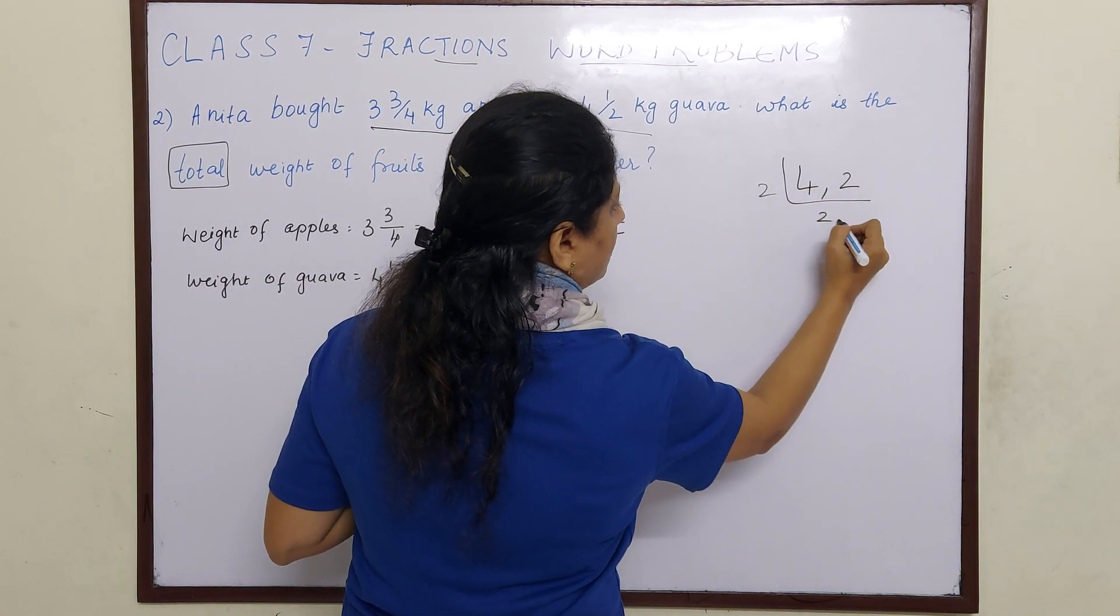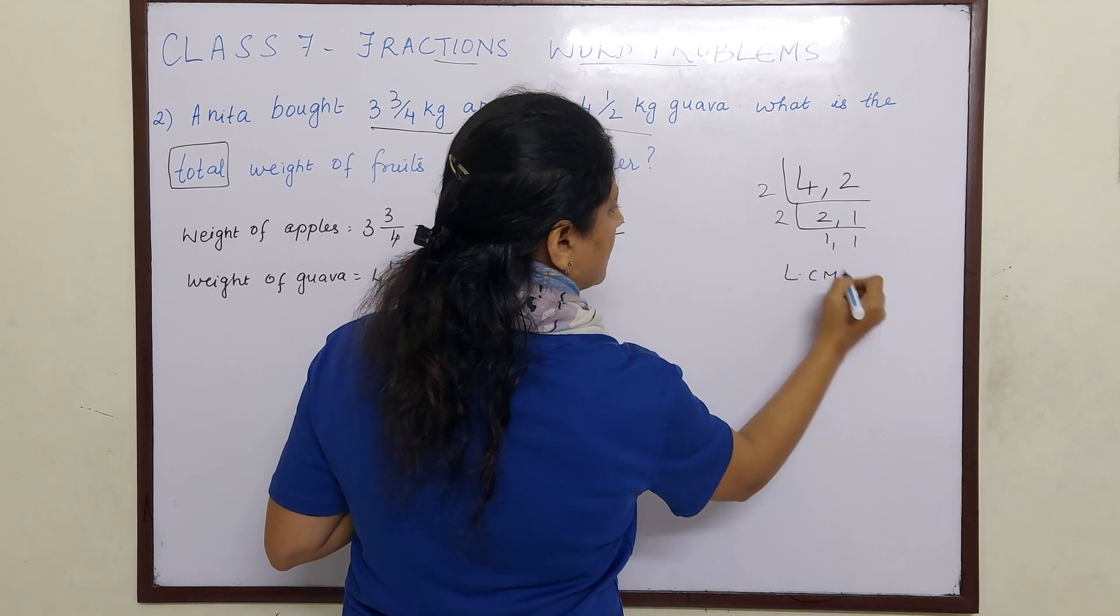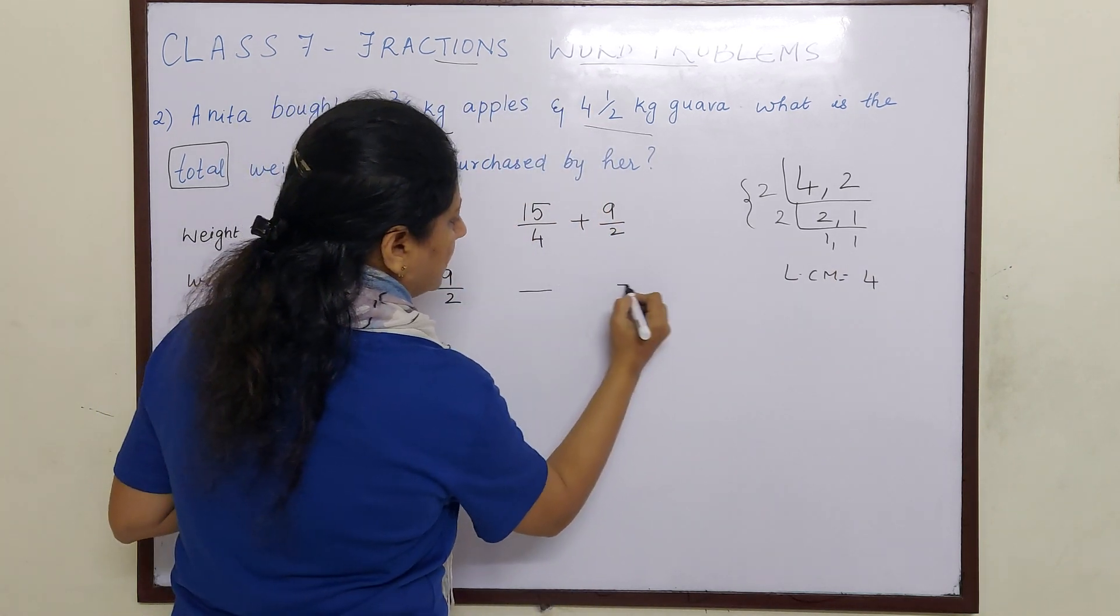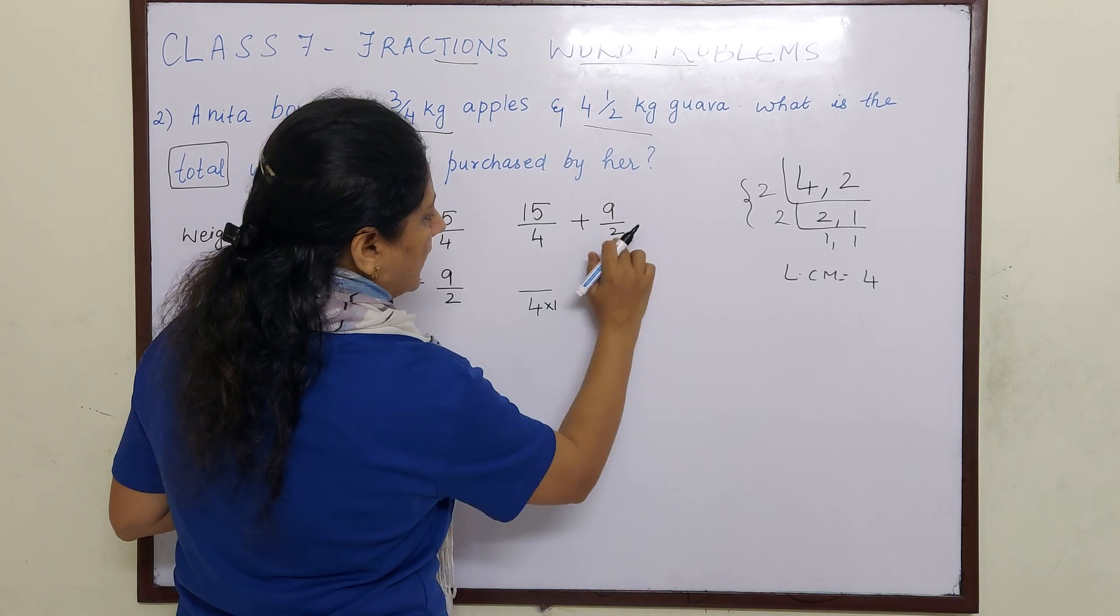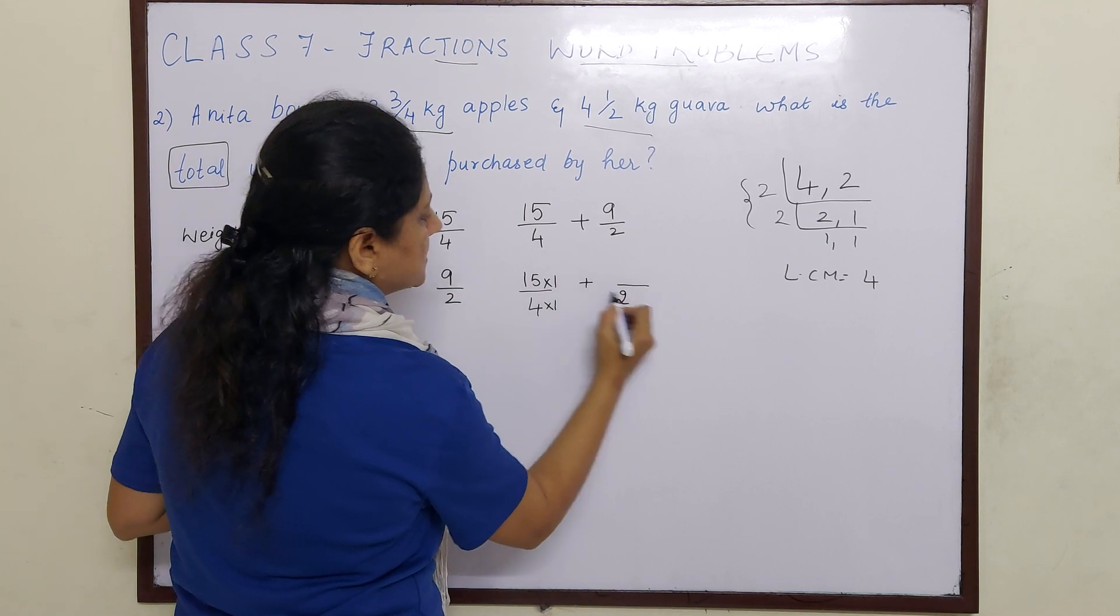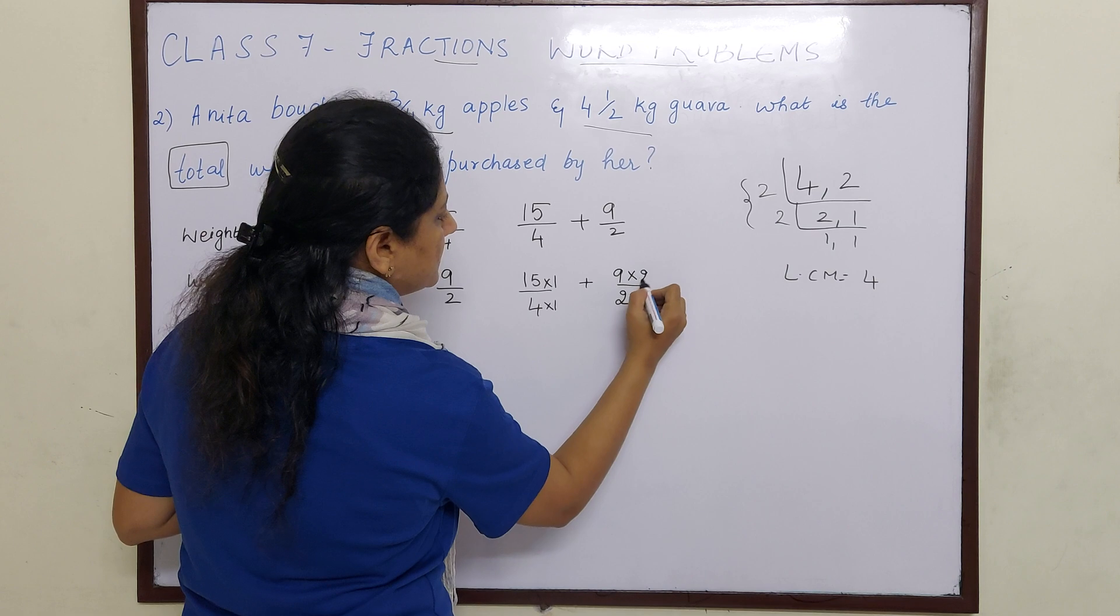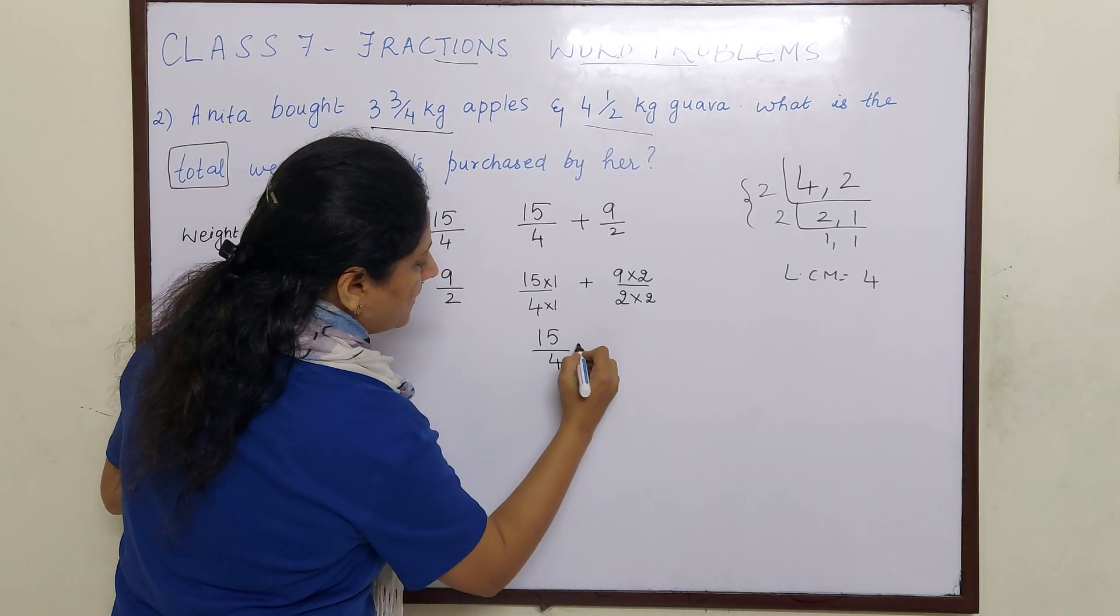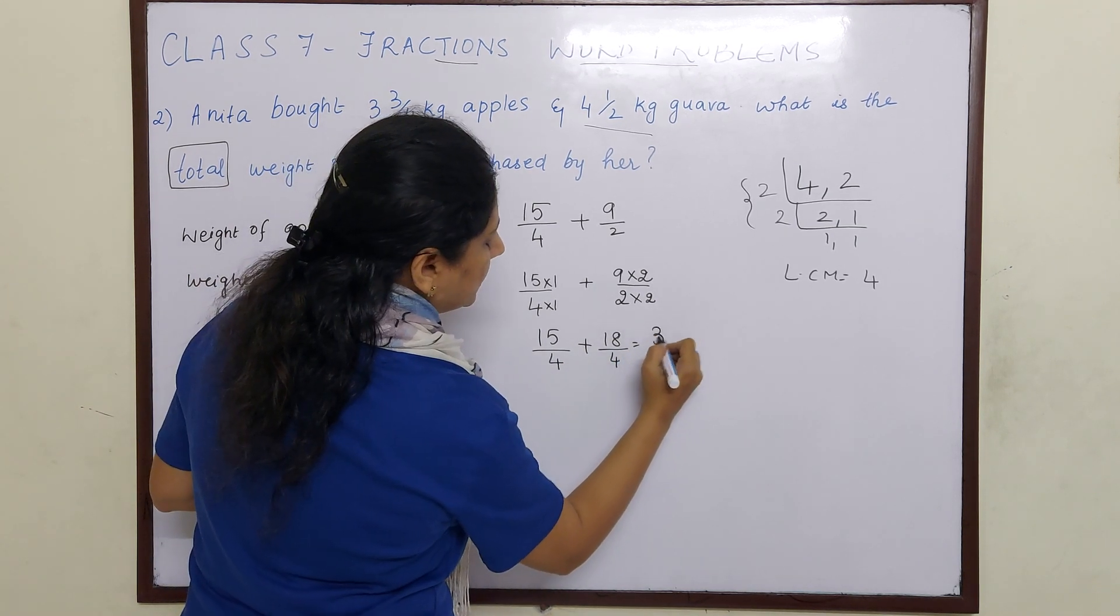So let us take LCM of 4 and 2. 2 times 2 is 4. So our LCM is equal to 4. So here we have to convert both into denominator 4. 4 times 1 is 4, and this is 2. So 2 times 2 is 4. Numerator also has to be multiplied by 2. So 15 times 1 is 15/4 plus 9 times 2 is 18/4 will give you 33/4.